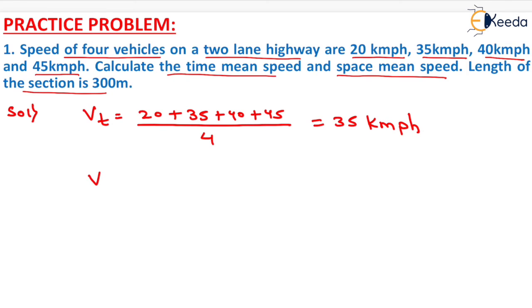If we have to determine the value of space mean speed, then it will be equal to 4 divided by 1/20 plus 1/35 plus 1/40 plus 1/45.